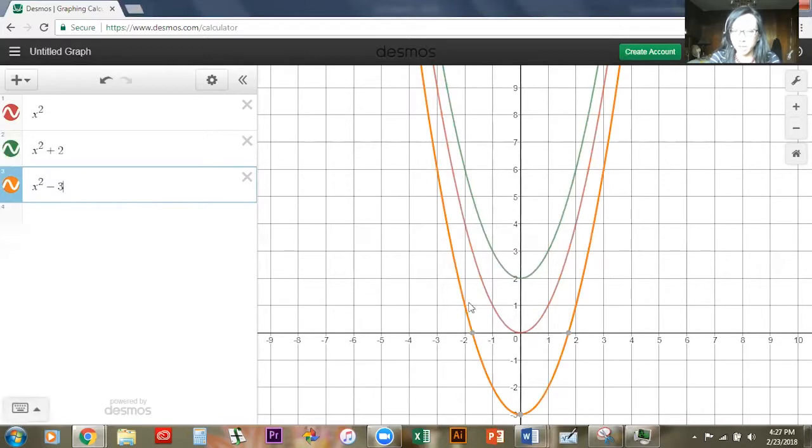All three of those parabolas are exactly the same size. They've just been shifted up or down depending on the number added or subtracted, that constant at the end of the equation.